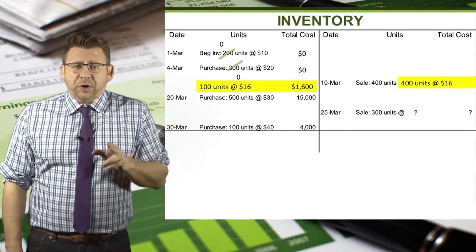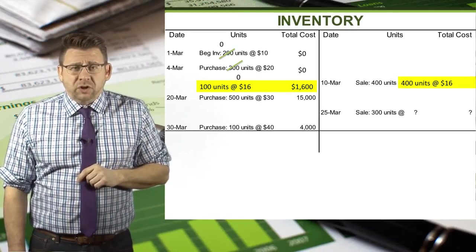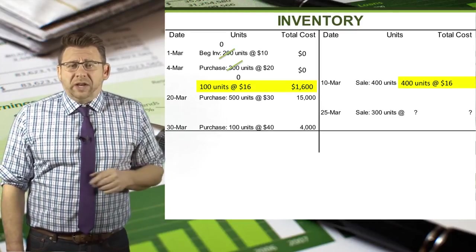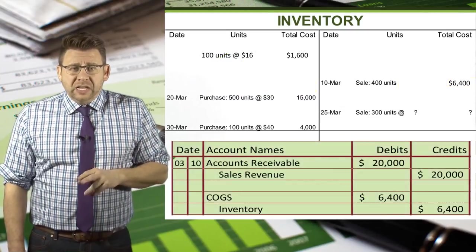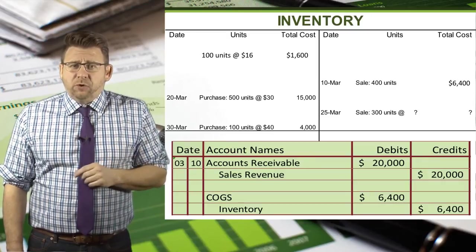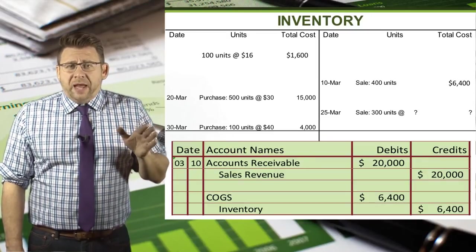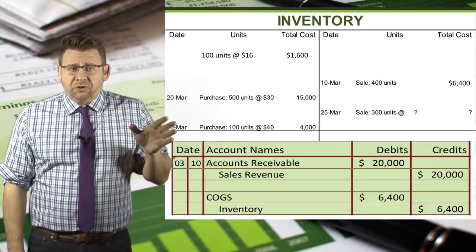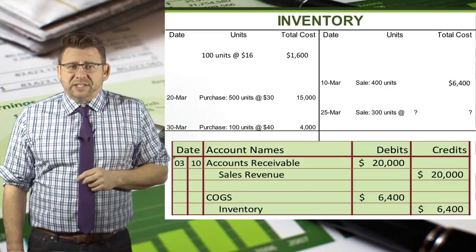The $16 per unit is applied not only to the 400 units sold, but also to the remaining 100 units in inventory. So cost of goods sold for the March 10th sale is $6,400. The inventory from that point is 100 units with an average total cost of $1,600.